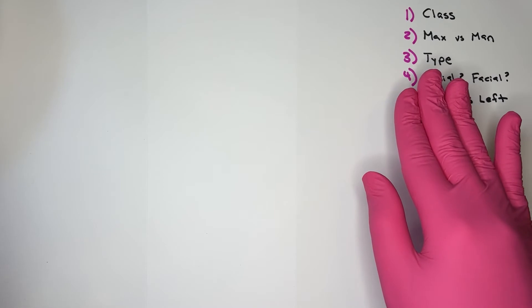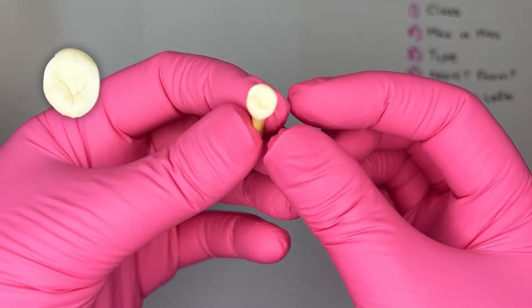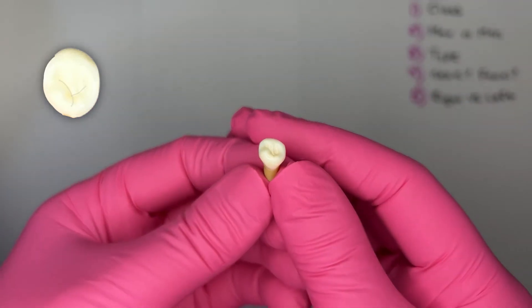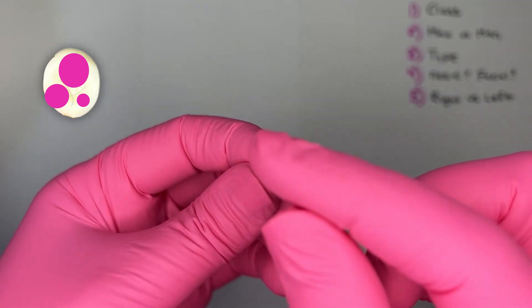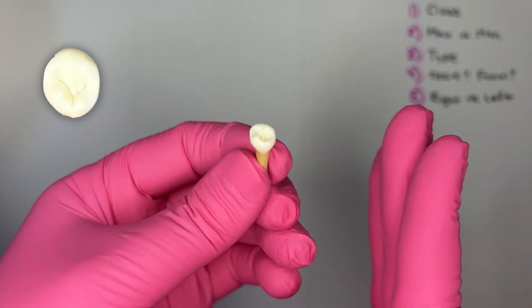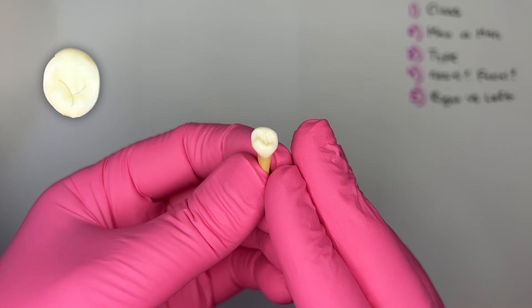Step number three, what type of mandibular premolar is this? The first or second? I look at the occlusal anatomy for that. This tooth has one, two, three cusps, grooves in a Y shape, and not distinct mesial and distal pits. So this is a mandibular second premolar.